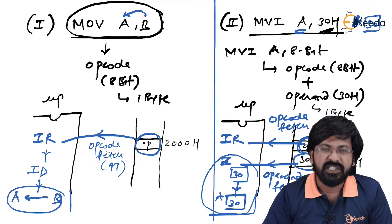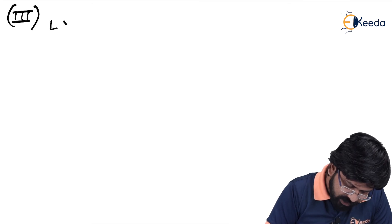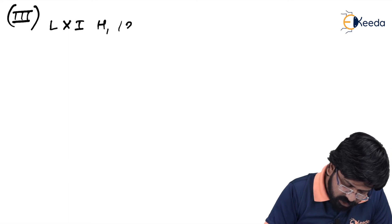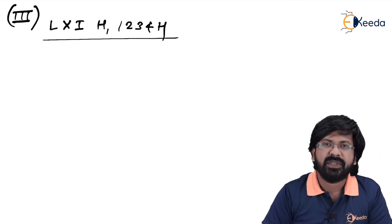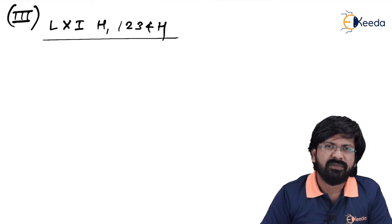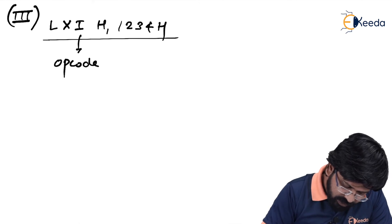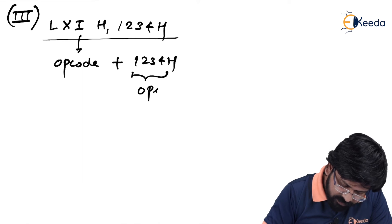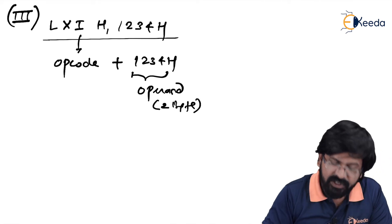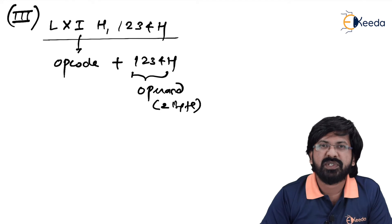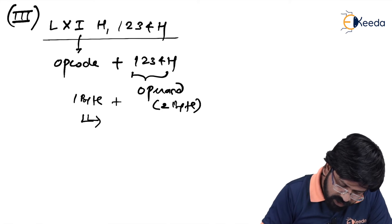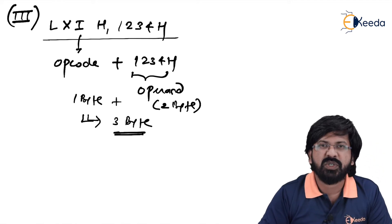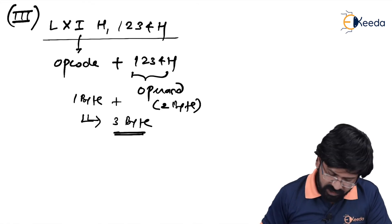Let us move to the third instruction: LXI H,1234H. Step 1: identify opcode and operand. Every instruction has one opcode by default, which is 1 byte. The operand 1234H is 4 hexadecimal digits — 4 digits × 4 bits = 16 bits = 2 bytes. So opcode is 1 byte plus operand is 2 bytes, making LXI H,1234H a 3-byte instruction requiring 3 consecutive memory locations.